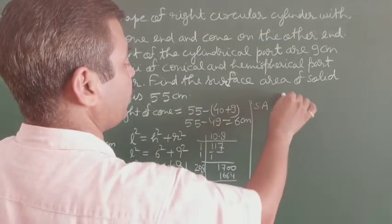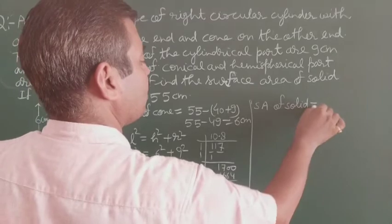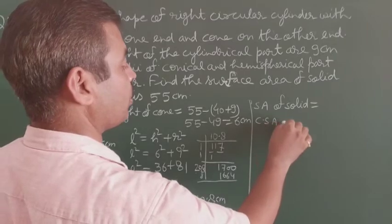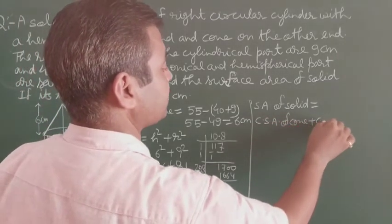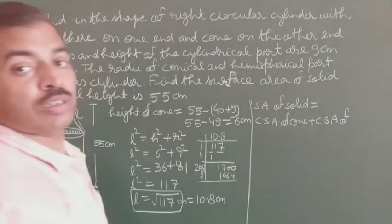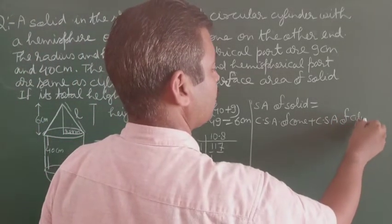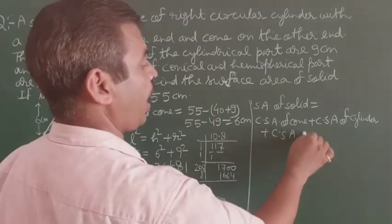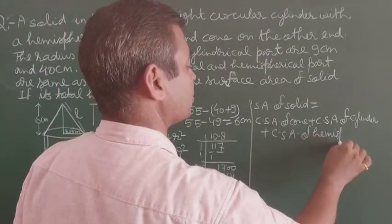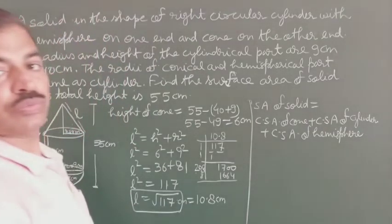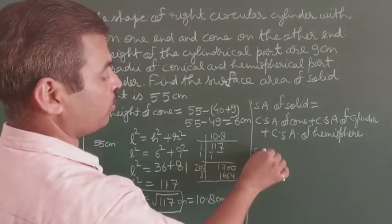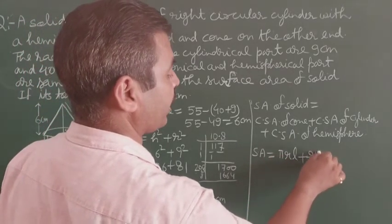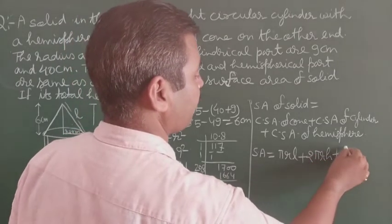Now we can calculate the surface area of the solid. Surface area equals CSA of cone + CSA of cylinder + CSA of hemisphere. That is: πRL + 2πRH + 2πR². Let us put the values in.